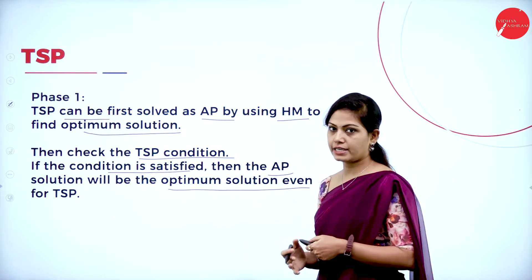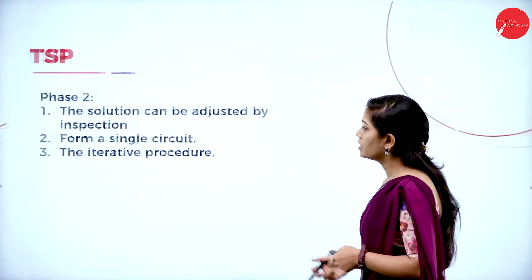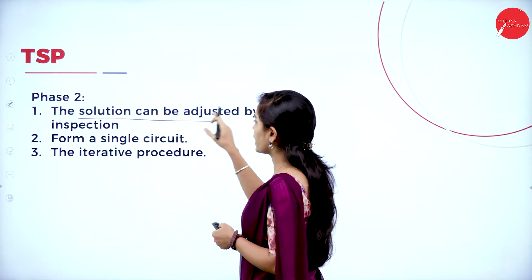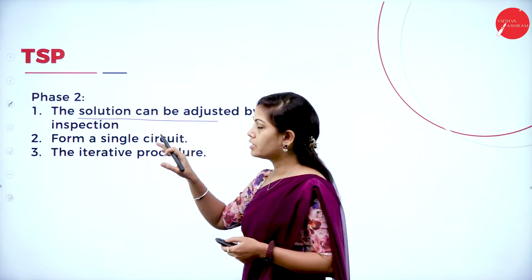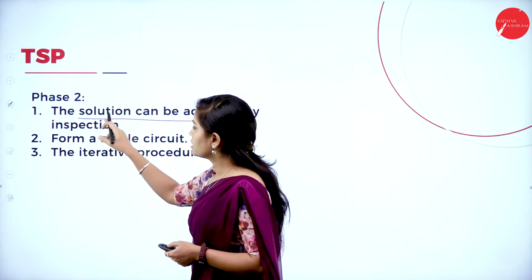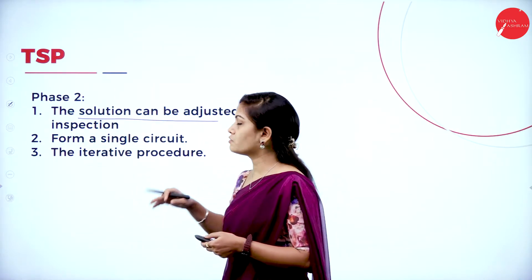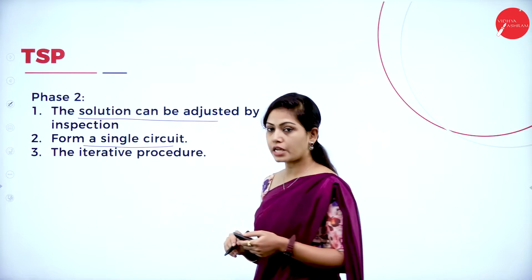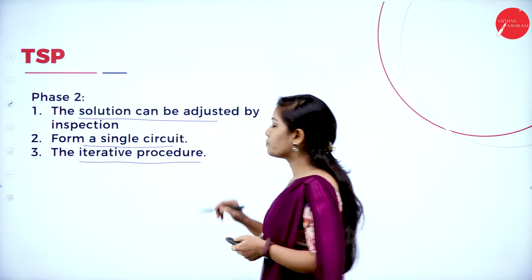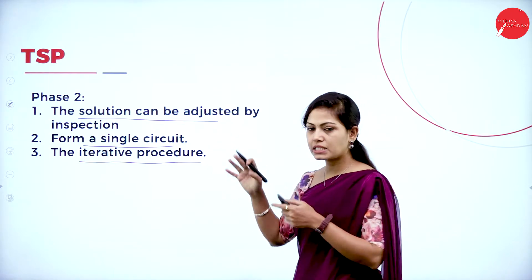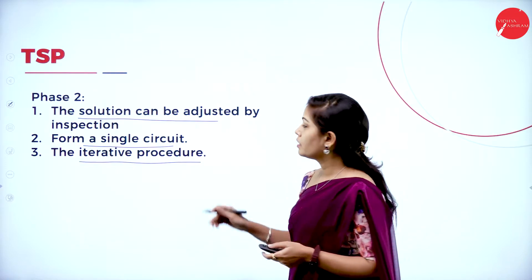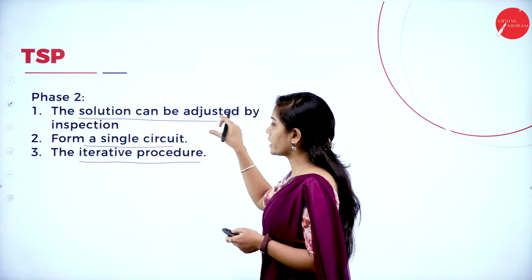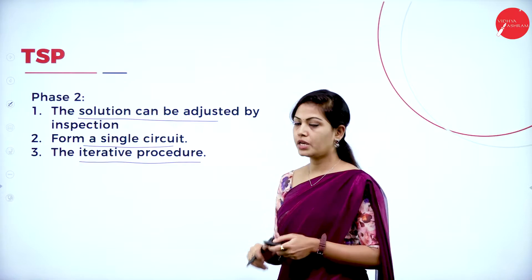If your condition is not satisfied — if you get the indirect method — we have to go to step 2, that is phase 2. First check if the solution can be adjusted by the inspection method. In phase 2 we have 3 methods: the solution can be adjusted by inspection, form a single circuit, and the iterative procedure. Using these 3 steps we can complete phase 2 and find the optimum solution. Today I am explaining the inspection method.